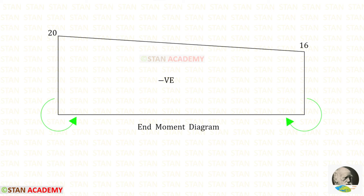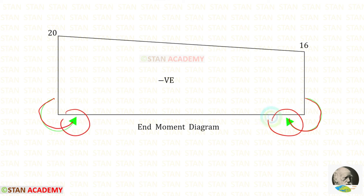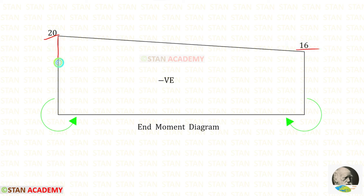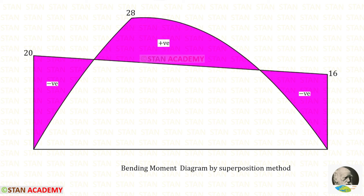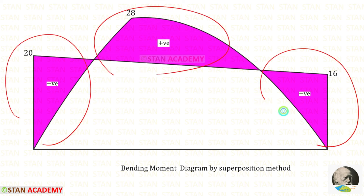Now let us draw the end moment diagram. MA equals 20 and MB equals 16. MA acts anti-clockwise and MB acts in the clockwise direction, and both arrows indicate upwards, so the end moment diagram comes above the baseline. Since 20 is greater than 16, the line is slightly higher on the MA side. We then combine both diagrams to get the final bending moment diagram: where both diagrams overlap, we leave the space empty, and wherever they act alone we mark with the appropriate signs.